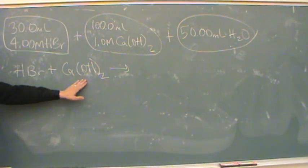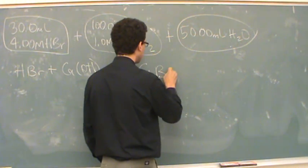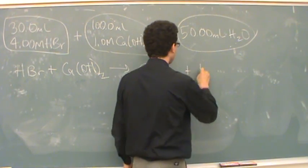Let's do that. We have a strong acid and here a strong base. So we would get a salt, which in this case is calcium bromide, and water.